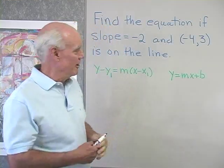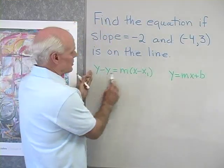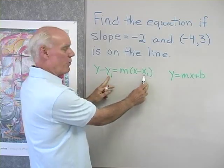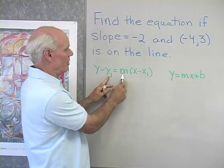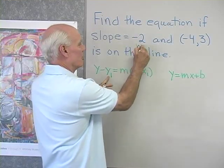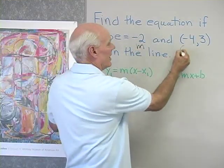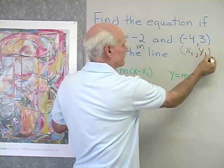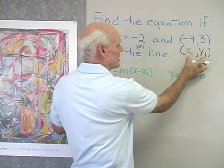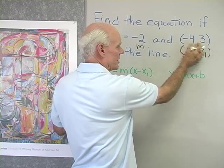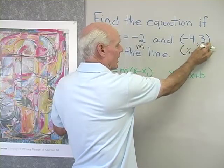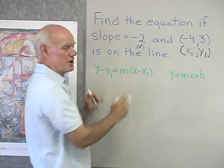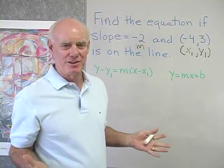Let's start with the point-slope form. I want to use this form to find the equation if I'm given one point and the slope. I am given the slope — that's m — and here's the point (x₁, y₁). So all I have to do is take x₁, which is negative four, y₁, which is three, and m, which is negative two, and substitute in to get the equation of that line.